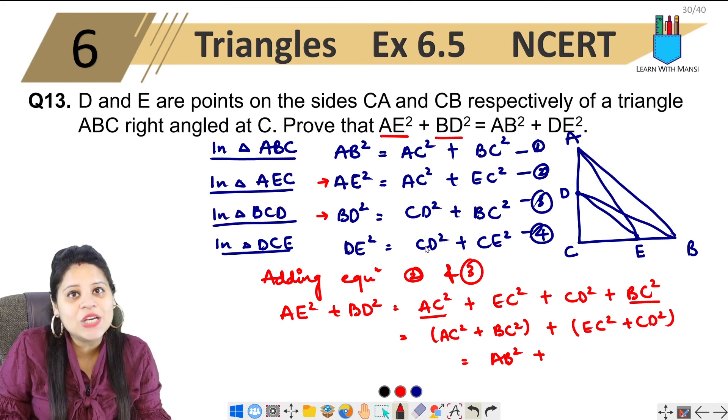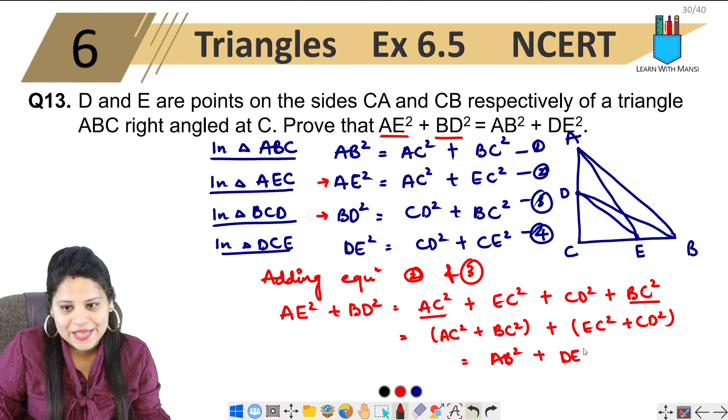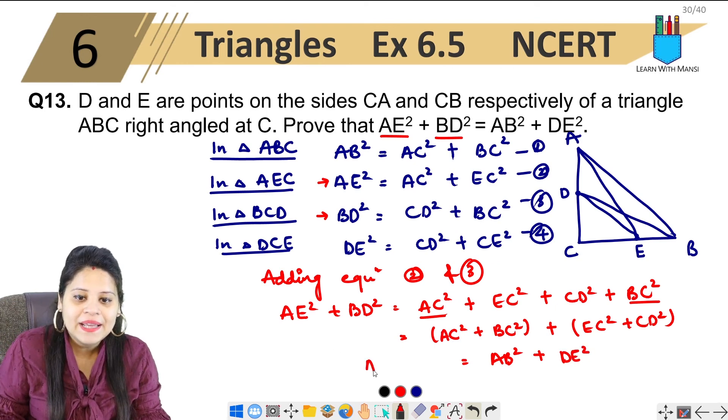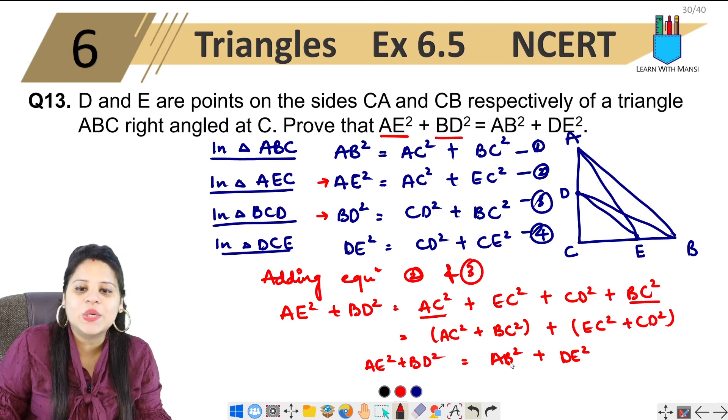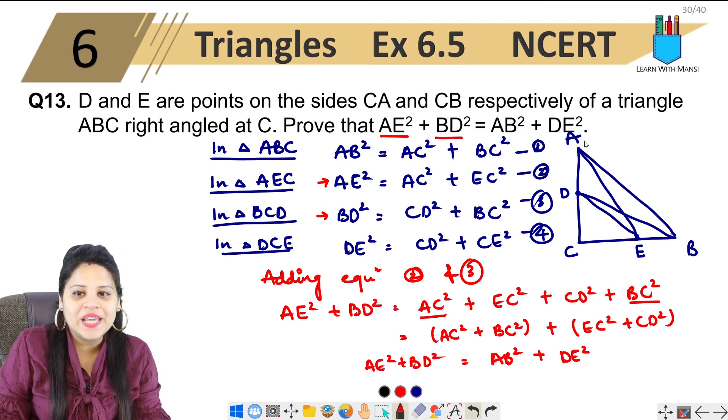And CD and CE is our DE square. So here I got AE square plus BD square equals AB square plus DE square. And this is the question.